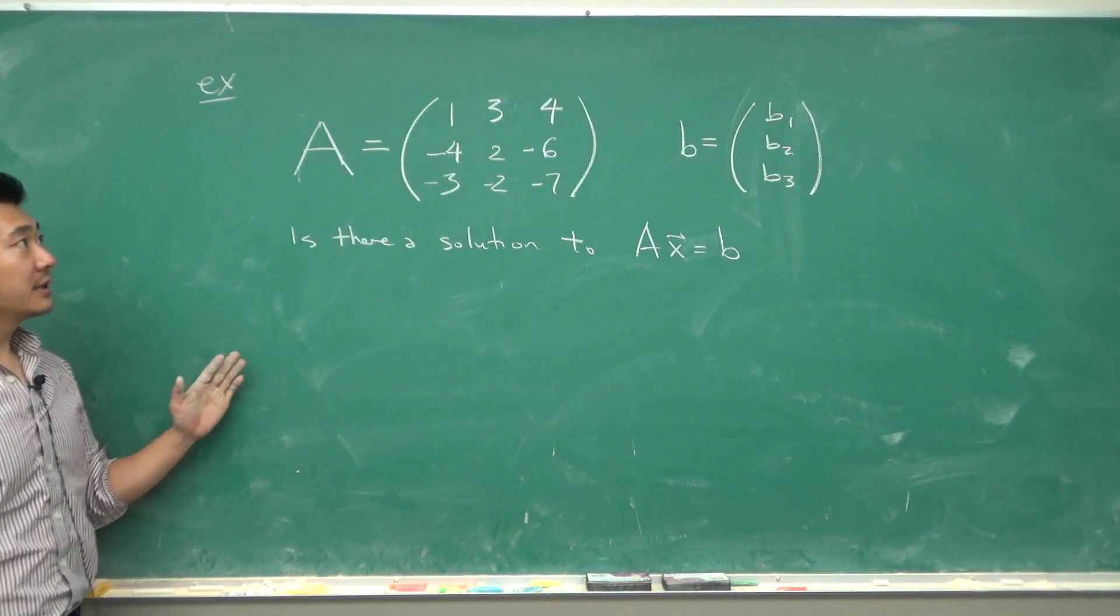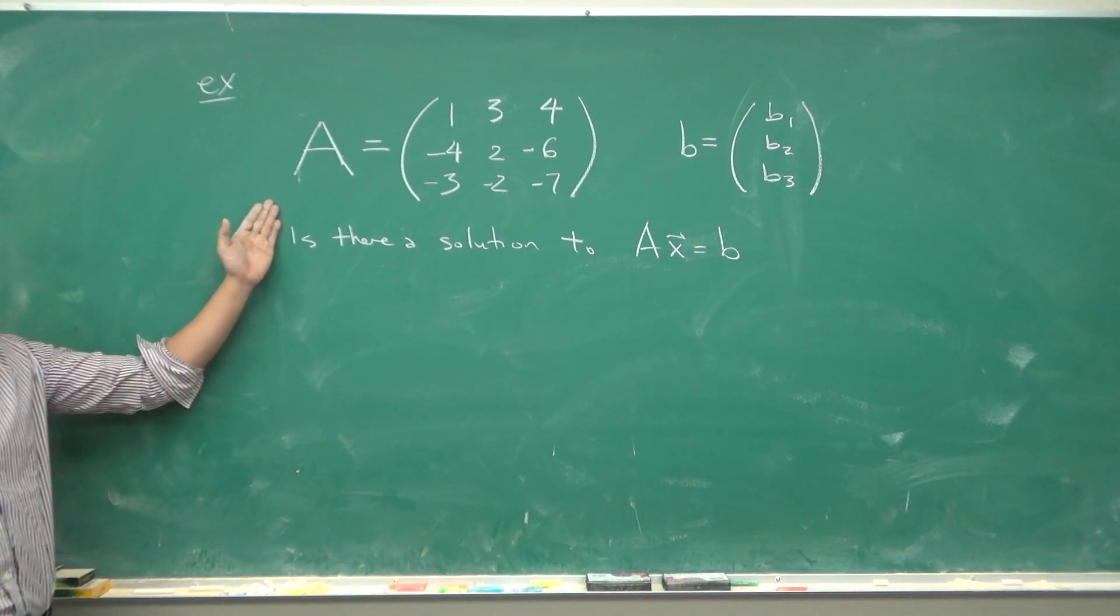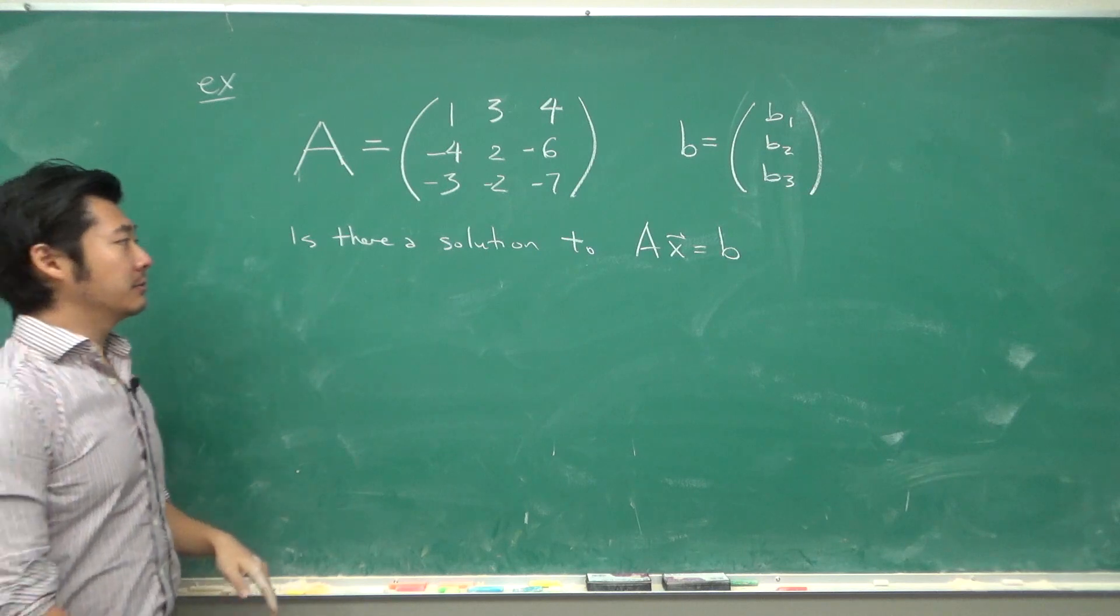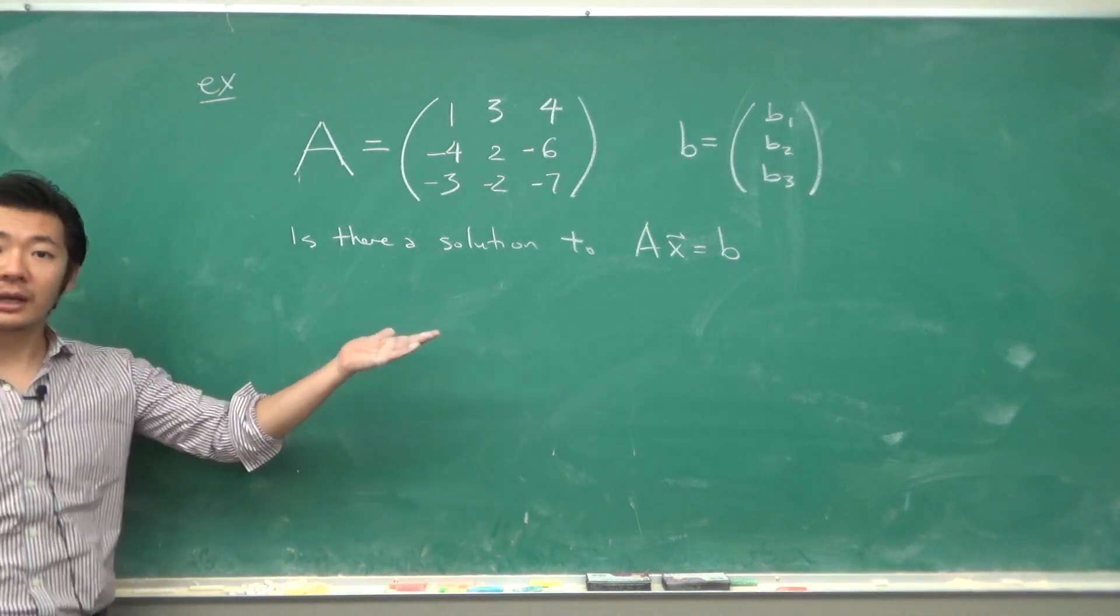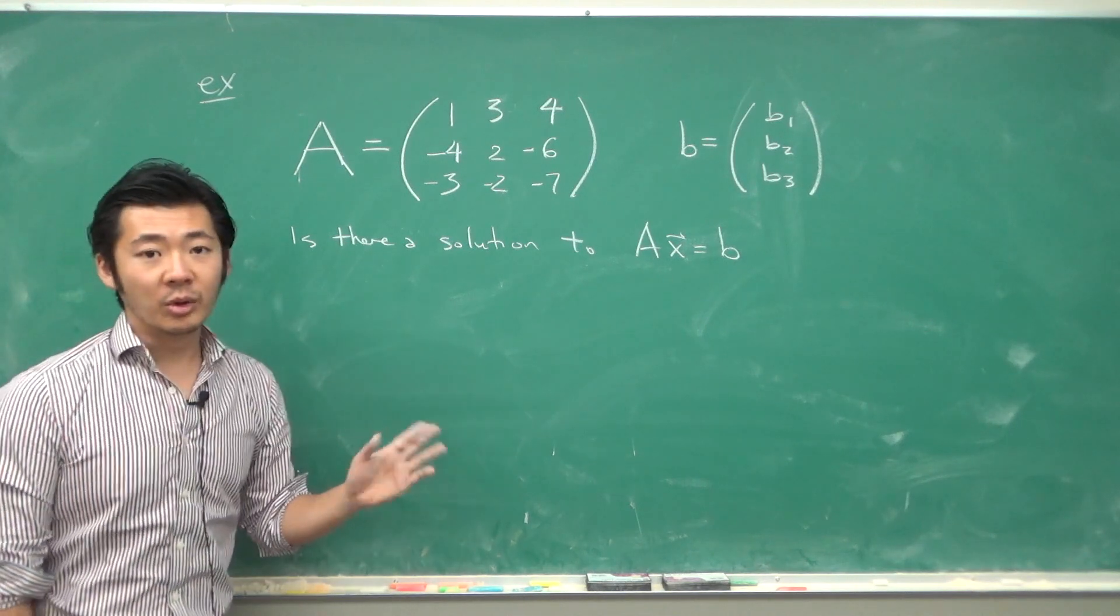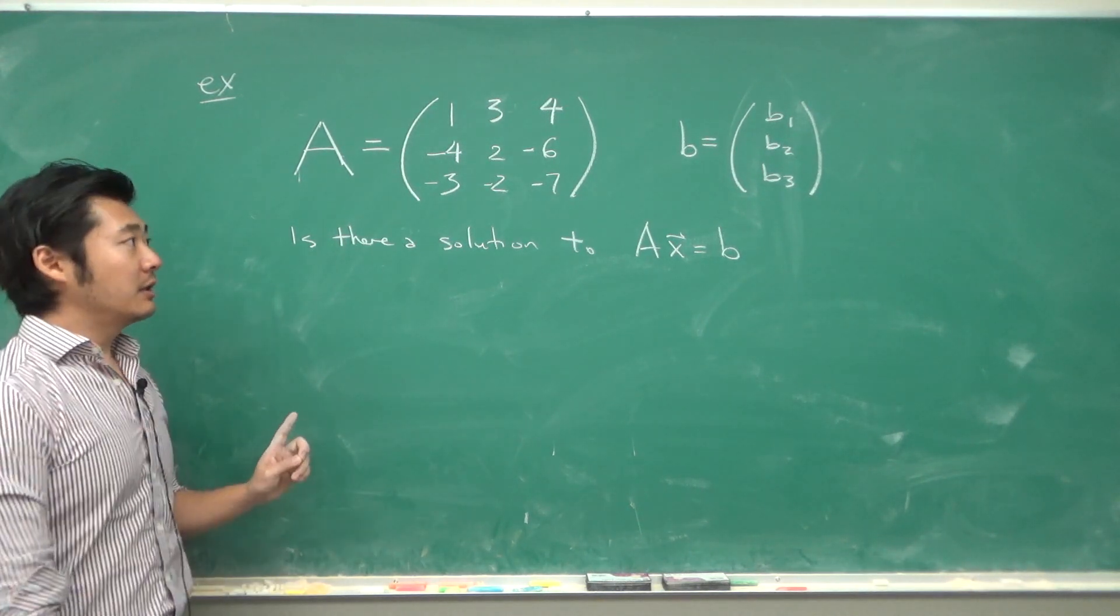So let's consider this example: given this matrix A and some vector B, is there always a solution to Ax = B? Well, we can form the augmented matrix and row reduce, but we can use one of our theorems. Namely, if we row reduce A, then we can figure out where the pivot positions are.